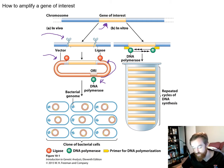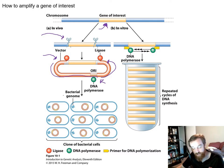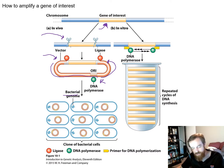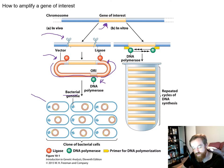Once we have a copy of the gene, we put that vector into bacteria. Those plasmids — those circular pieces of DNA in bacteria — will be replicated through each round of bacterial reproduction. So once we have that vector in bacteria, we can just grow the bacteria over and over again, producing more and more copies of our gene of interest.